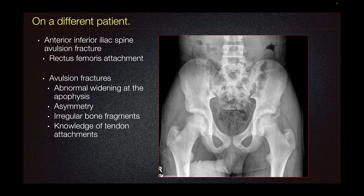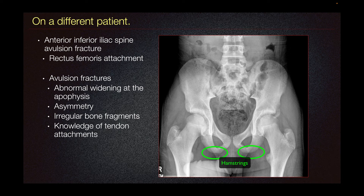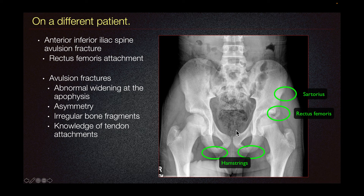Knowledge of tendon attachments in the pelvis is important in determining the location of avulsion fracture. For instance, the most common location is the ischial tuberosity — right here and right here — where the hamstring tendons attach. It is followed by the anterior inferior iliac spine, and then the anterior superior iliac spine.